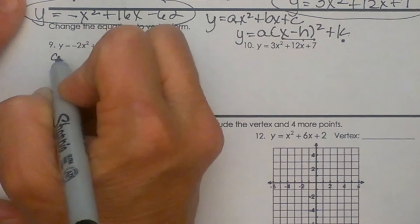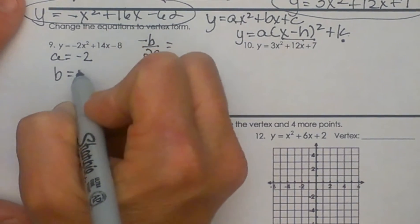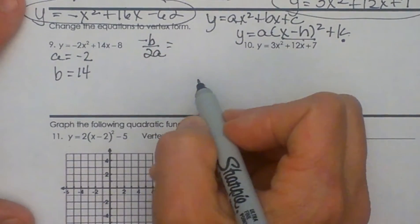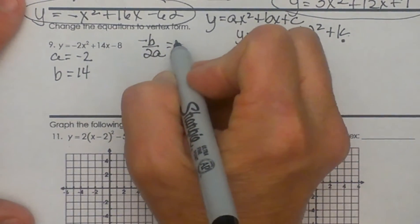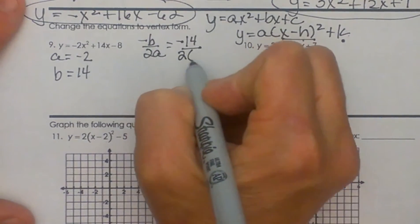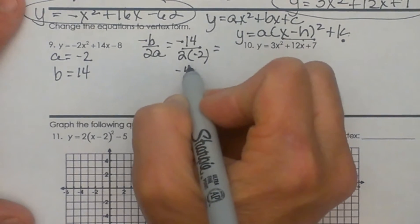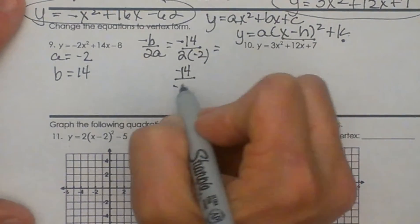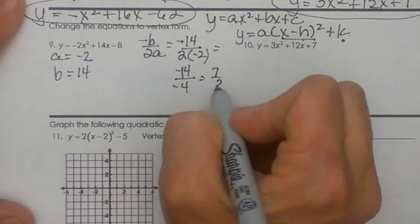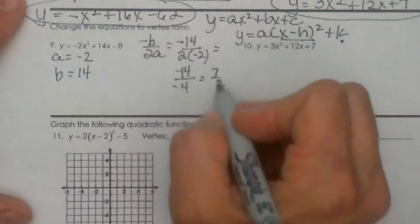So let's identify a and b. Let's see, a in this case is negative 2 and b is positive 14. So let's plug those in. The opposite of b is a negative 14 divided by 2 times a of negative 2. So that is going to give me negative 14 over negative 4 which is 7 halves. Oh, I have a fraction. That is alright though. I know I can handle this.